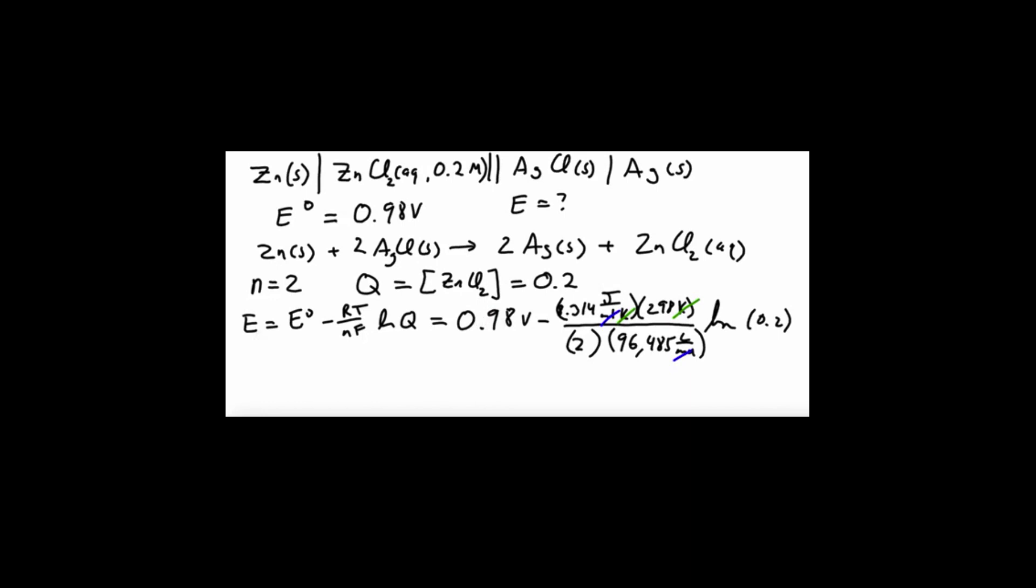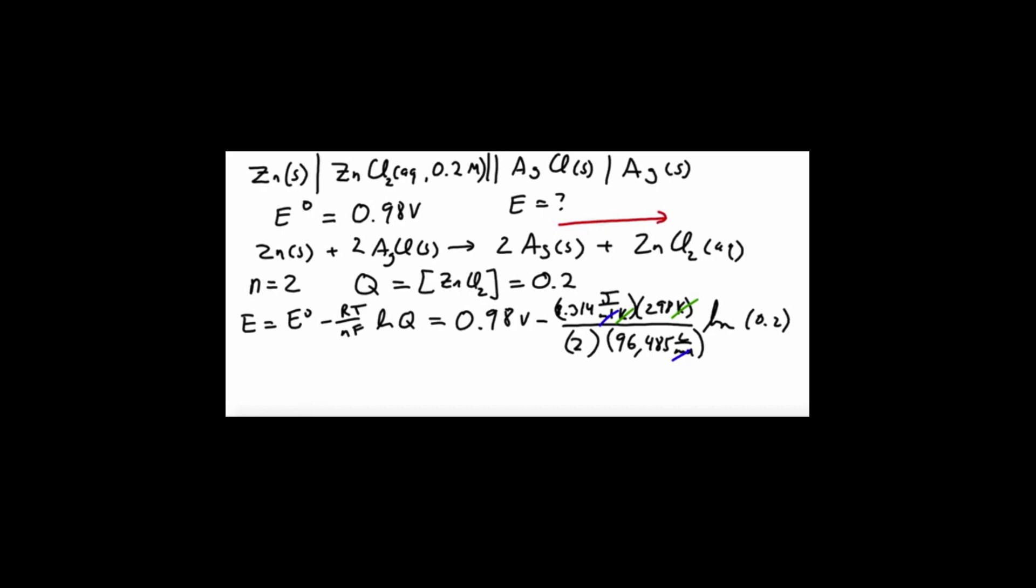We also check to see if this makes sense conceptually. Notice that our concentration of our product, zinc chloride, is less than 1 molar. It's less than the standard concentration. So we have a low concentration of product. That should drag this reaction to the right. In other words, we should expect E to be greater than E standard. Will that happen? Let's look at our number. This is less than 1. So this log is going to be negative. We have a negative sign here. So a negative times a negative gives us a positive. This term is going to be positive. It's going to make this number bigger, which is what we said should happen, because of the low concentration of product. So we should get a number greater than 0.98. So we plug all these numbers in and we get that E is equal to 1.0 volts. So indeed it was greater than our standard cell potential because of this low concentration. And that's how you use the Nernst equation.